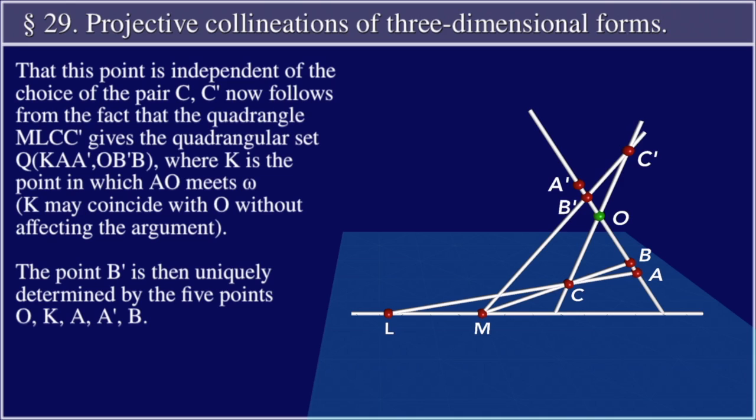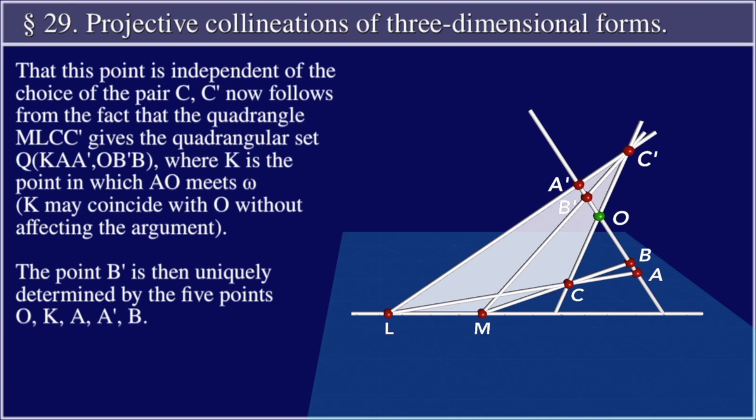now follows from the fact that the quadrangle M, L, C, C prime gives the quadrangular set Q of K, A, A prime, O, B prime, B, where K is the point in which AO meets omega. K may coincide with O without affecting the argument.